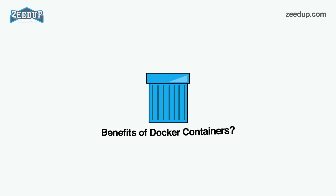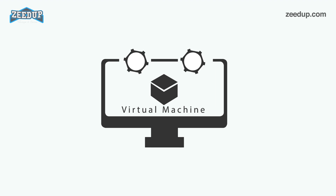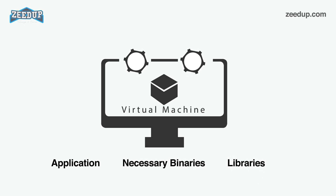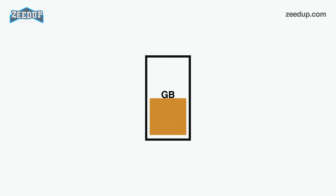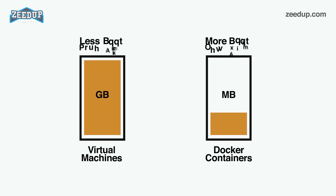The benefits of Docker containers: Docker containers are popular now because they have virtual machines beat. VMs contain full copies of an operating system, the application, necessary binaries, and libraries, taking up tens of GBs. VMs can also be slow to boot. In contrast, Docker containers take up less space — their images are usually only tens of MBs — handle more applications, and use fewer VMs and operating systems. Thus, they're more flexible and tenable.